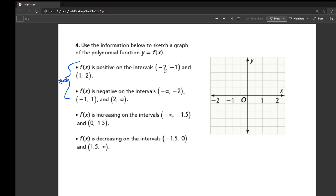So it's positive on the interval from negative 2 to negative 1. So here we know it's up here somewhere. It's also positive on the interval from 1 to 2. So we know that 1 and 2 have to be zeros as well.